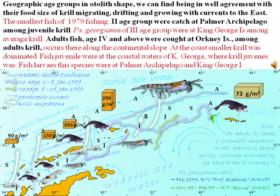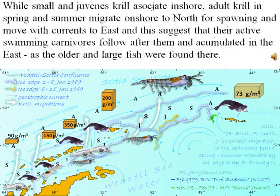Geographic age groups in otolith shape are found to be in good agreement with their food — krill migrating, drifting, and growing eastward with currents. The second age group was captured at Palmer Archipelago among juvenile krill. Adults aged 4 and above were caught at Orkney Island among larger adult krill. While small and juvenile krill associate with younger fish, adult krill in spring and summer migrate north for spawning and move eastward with currents, and active swimming carnivores follow them, accumulating in the east where older and larger fish were found.